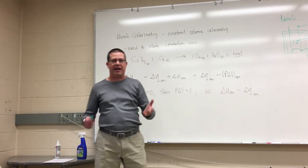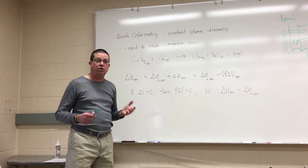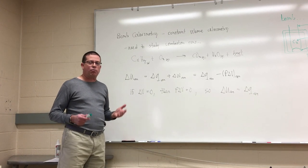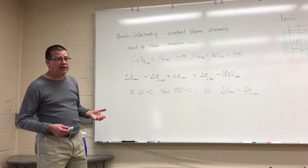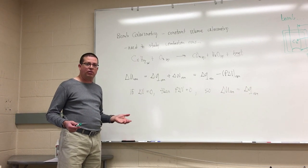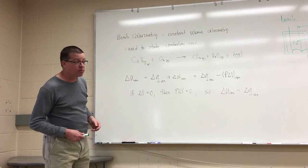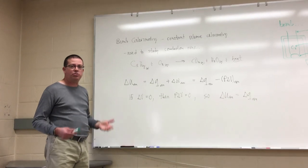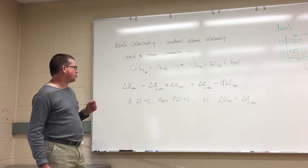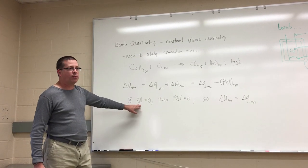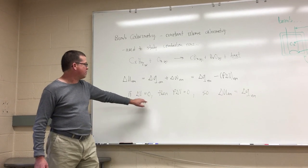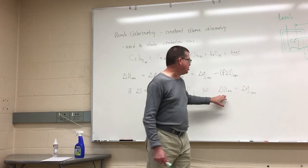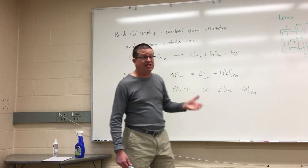If hot gases are expanding, the reaction is doing work on its surroundings, so we have that work term to include. Normally in calorimetry we'd like to make that work term equal to zero — we want to measure heat transfer, not work. So we engineer the reaction so that delta v equals zero. If delta v equals zero, the p·Δv term goes to zero, we lose the work term, and the internal energy change is simply equal to the heat associated with the reaction.